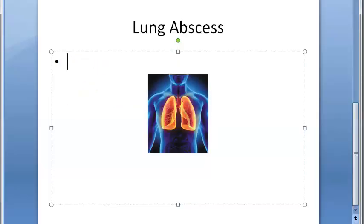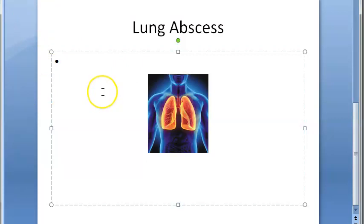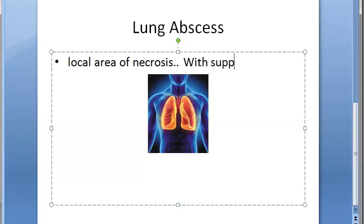The topic here is lung abscess under pulmonary infections. You will be asked the etiologies for lung abscess. Basically, abscess is a localized area of necrosis — so two key words here: local area of necrosis with suppuration, meaning there is pus.